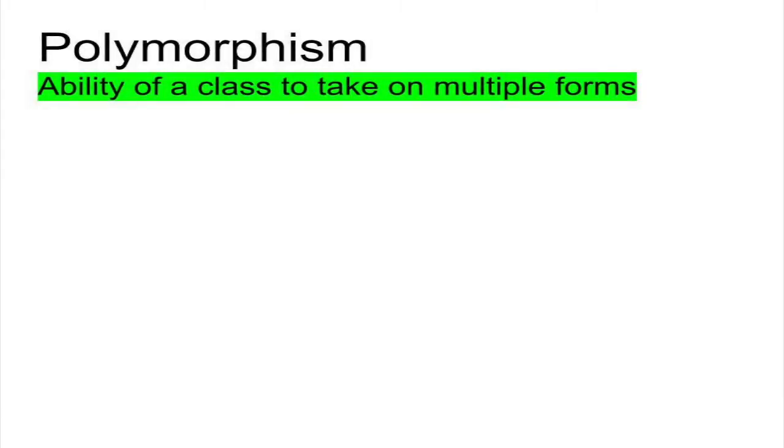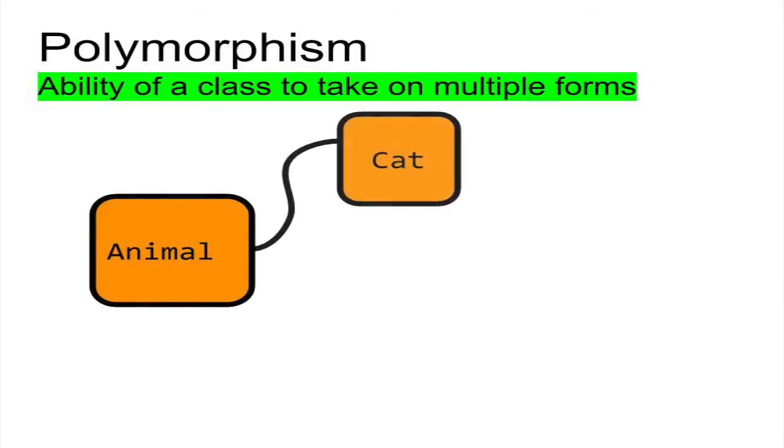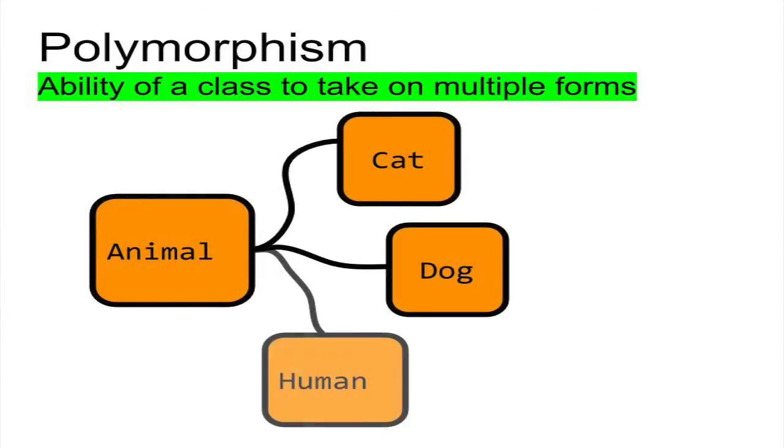Polymorphism comes from the word polymorph, which literally means a thing with many forms. In object-oriented programming, polymorphism is the ability of an abstract base class to take on multiple forms through its derived classes.